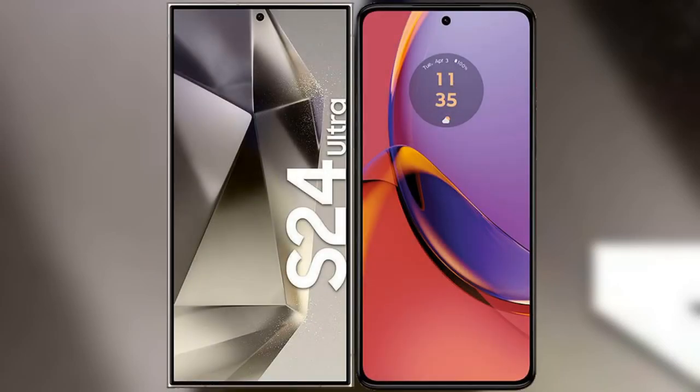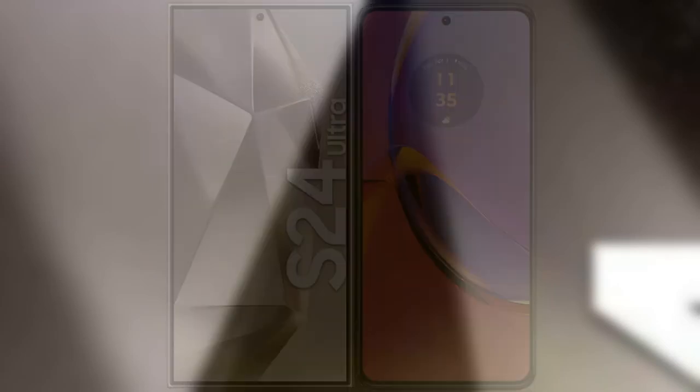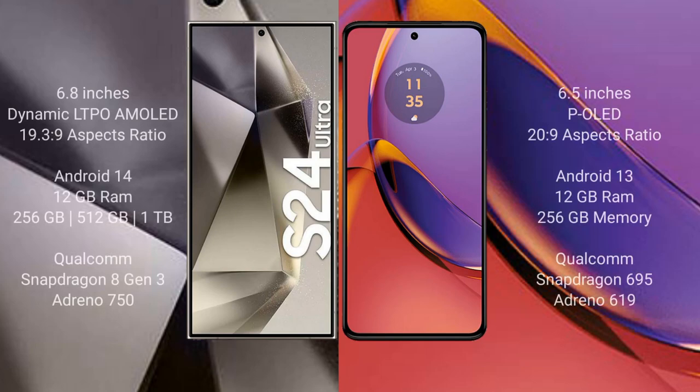I will compare the new Samsung Galaxy S24 Ultra with Motorola Moto G84. Samsung Galaxy S24 Ultra comes with a 6.8-inch Dynamic LTPO AMOLED display and aspect ratio 19.5:9. Motorola Moto G84 comes with a 6.5-inch pOLED display and aspect ratio 20:9.